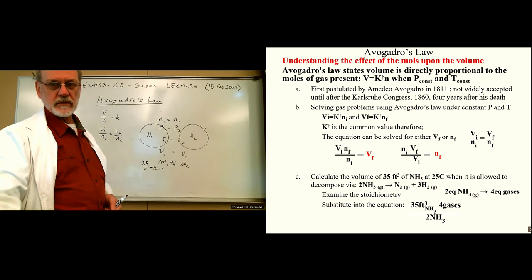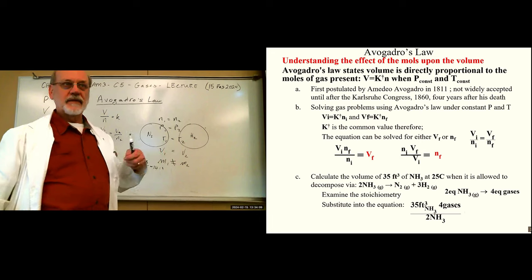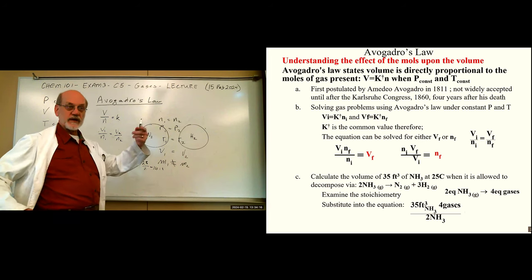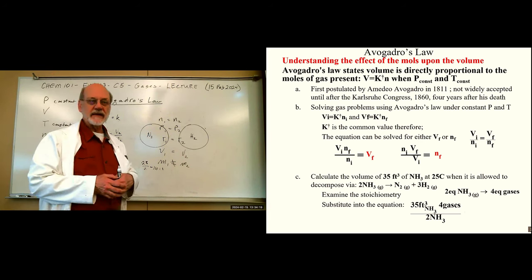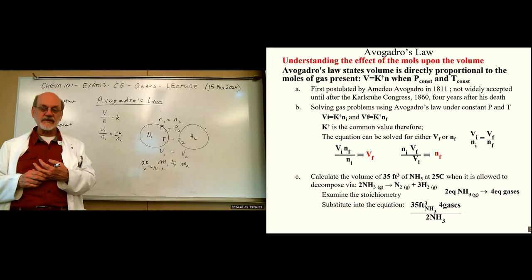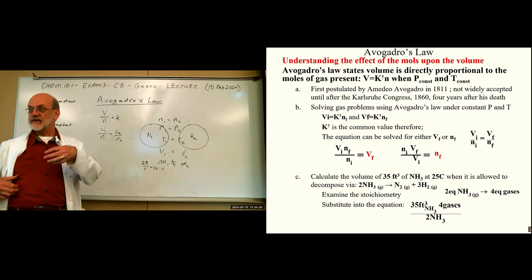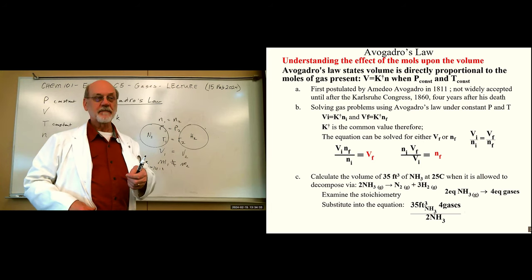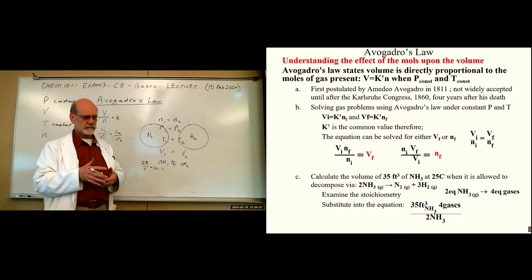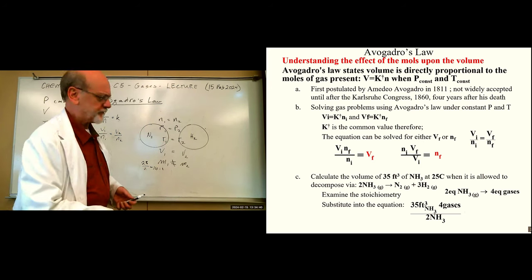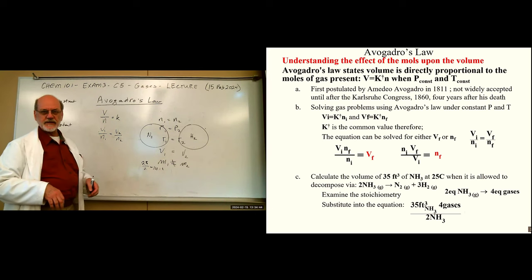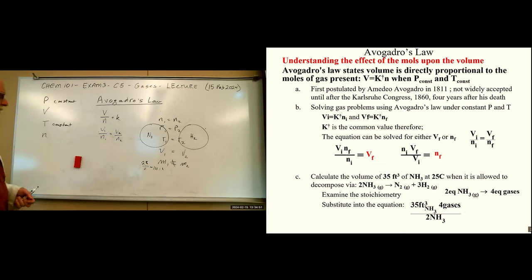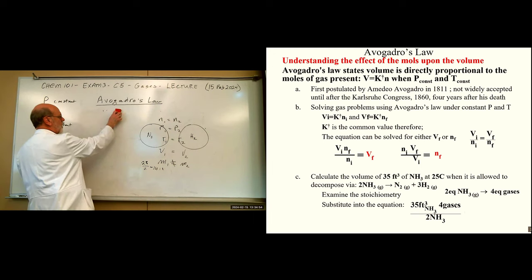Avogadro's student published a paper and went to a big Congress in Bavaria in 1860, presenting the work and handing out reprints. Some scientists actually read the report, applied it, solved their problems, and the word spread. This leads us to the techniques of stoichiometry — it's all based upon Avogadro. That's where stoichiometry came from.